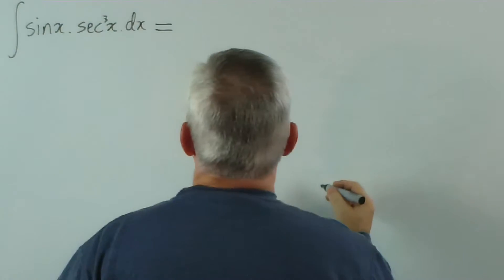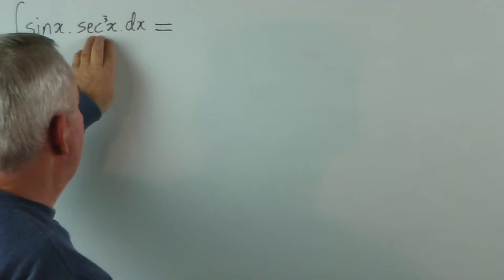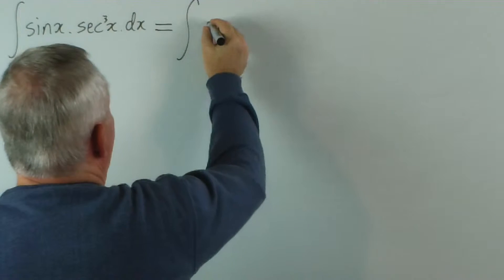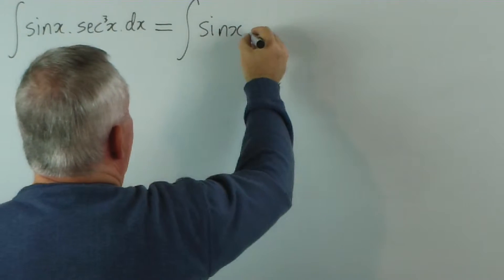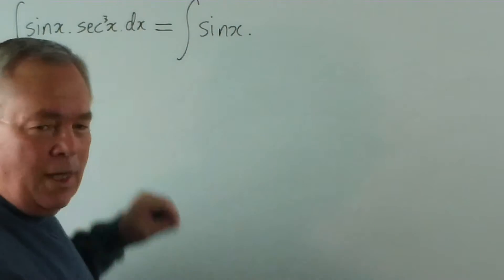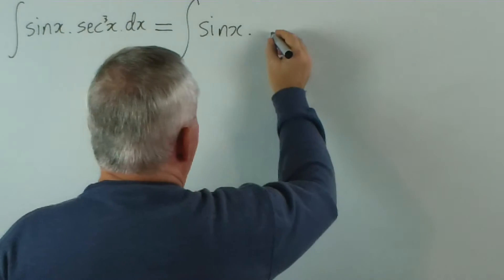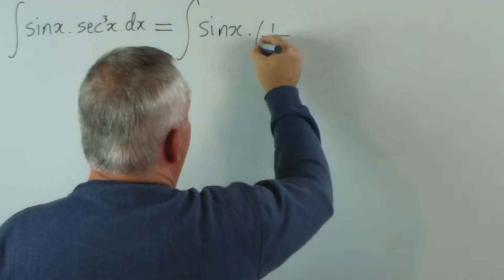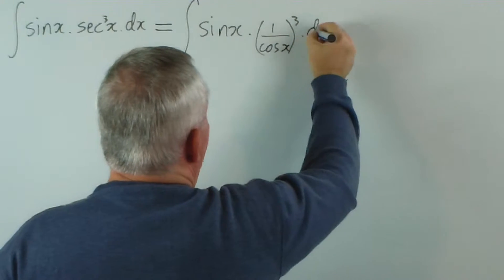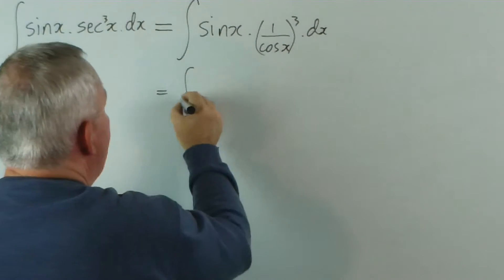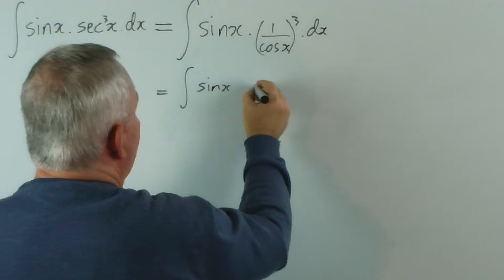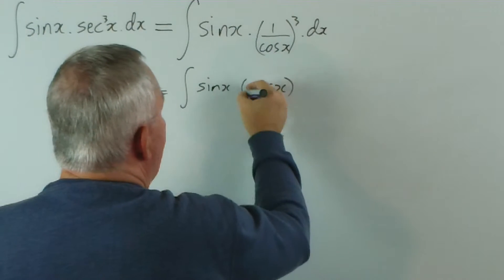Here we have a power of some function. The first thing I would do, by the way, is change the secant into 1 over cosine, which immediately becomes cos x to the negative 3.